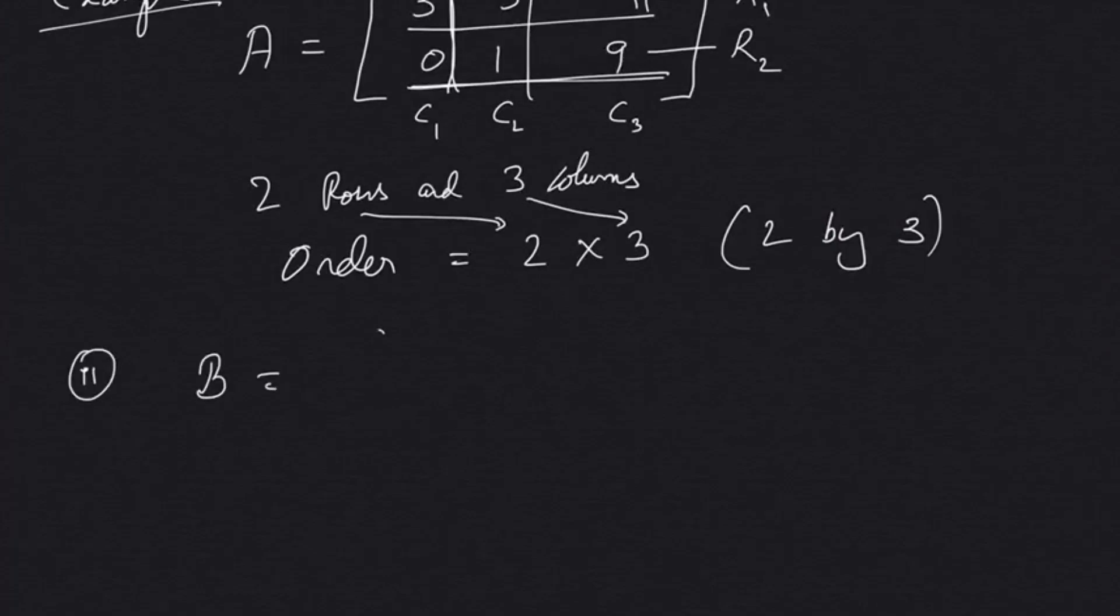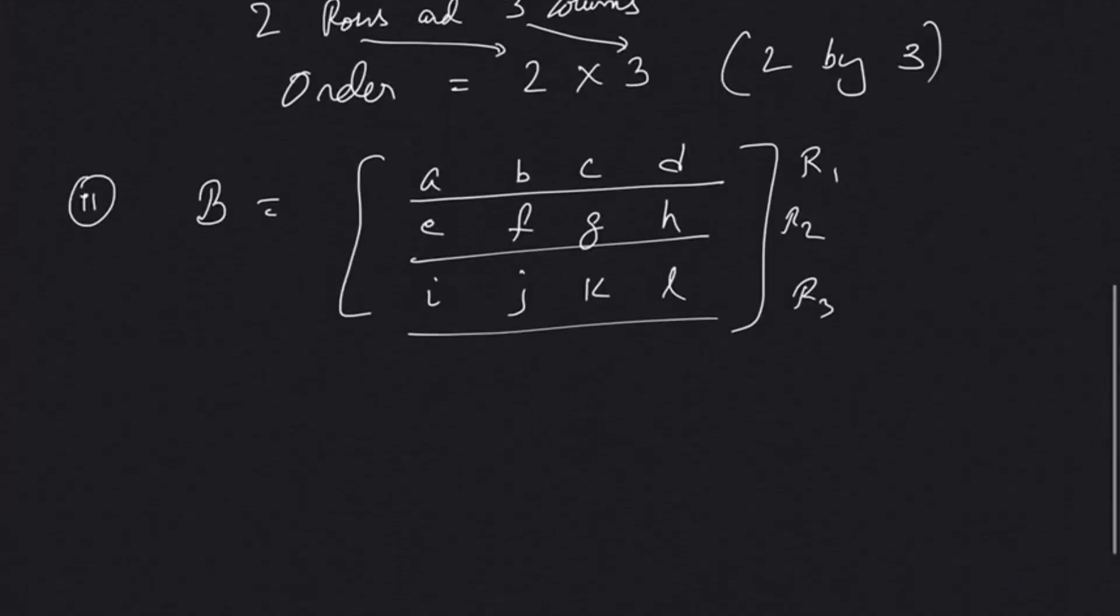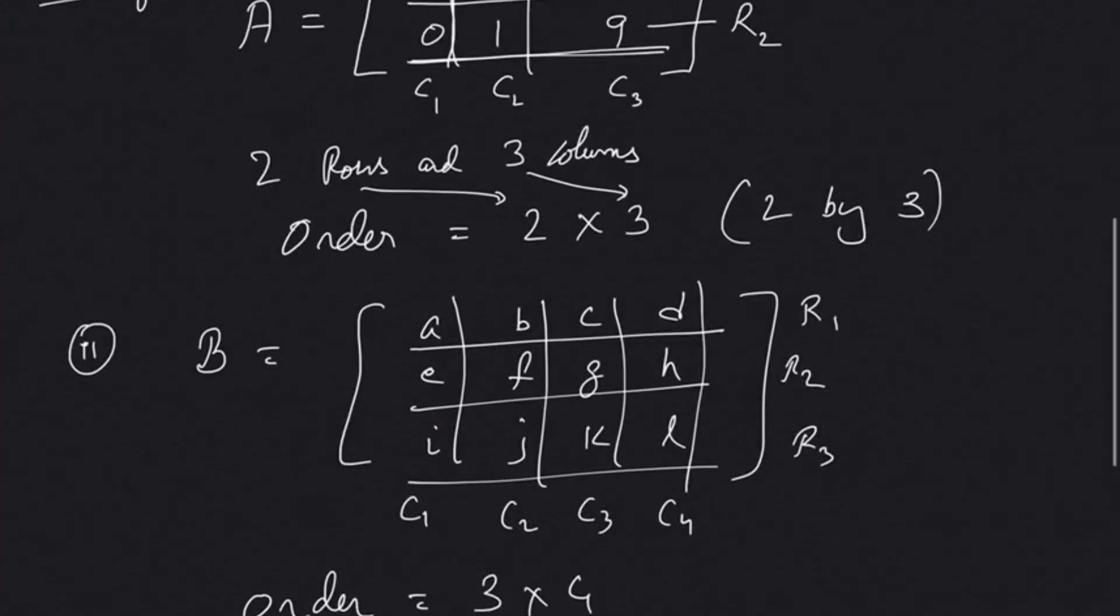Another example: a, b, c, d, e, f, g, h, i, j, k, l. Let's name this matrix. How many rows do we have? Row 1, row 2, row 3. How many columns? Column 1, column 2, column 3, and column 4. The order of this matrix is 3 rows and 4 columns, so 3 by 4.